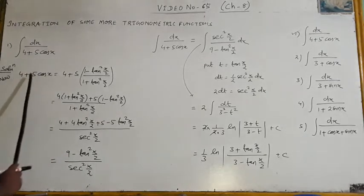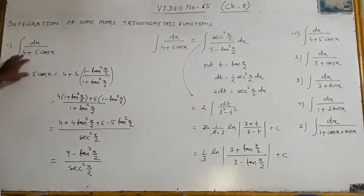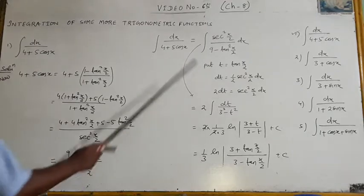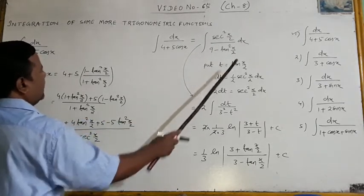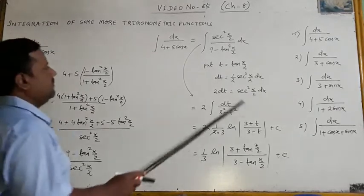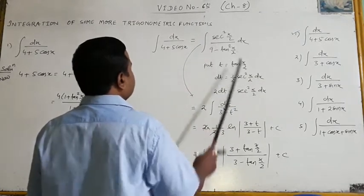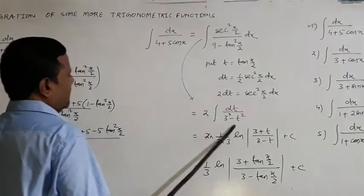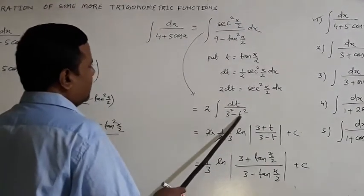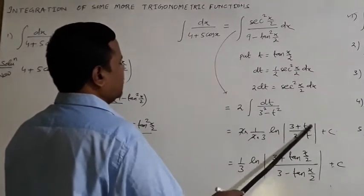So dx/(4+5cos x) becomes sec²(x/2) dx / (9−tan²(x/2)). Now put t = tan(x/2), so dt = (1/2)sec²(x/2)dx, meaning sec²(x/2)dx = 2dt. The integral becomes 2dt / (3²−t²). Using the formula ∫dx/(a²−x²) = (1/2a)·ln|(a+x)/(a−x)| from Chapter 4, with a=3: result = (1/3)·ln|(3+t)/(3−t)|.